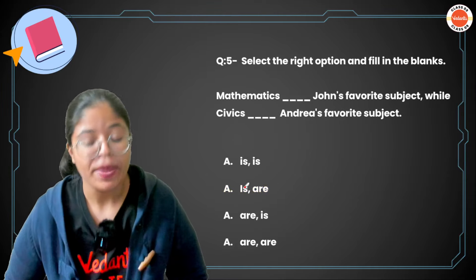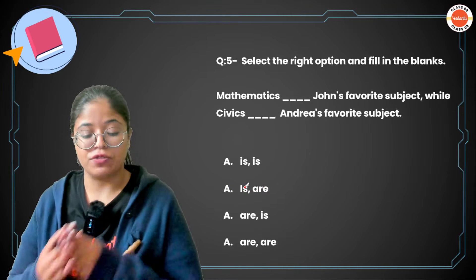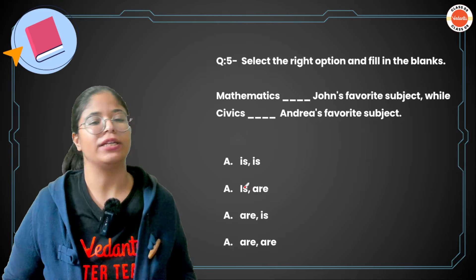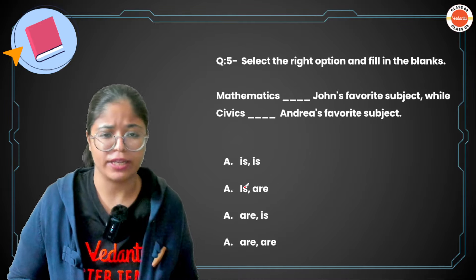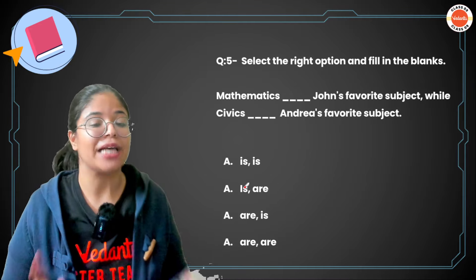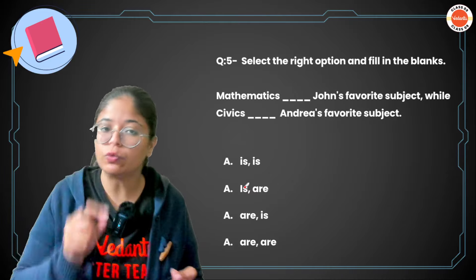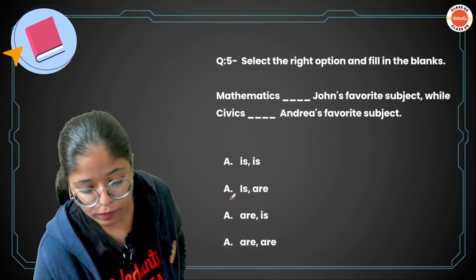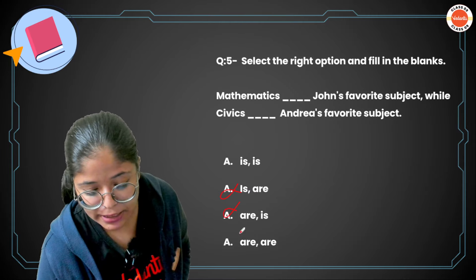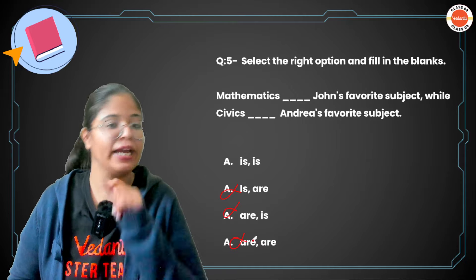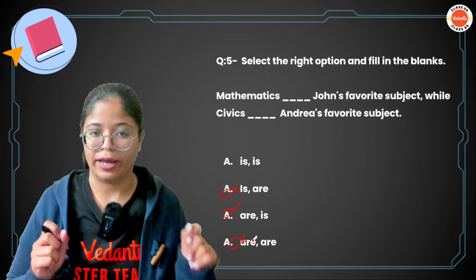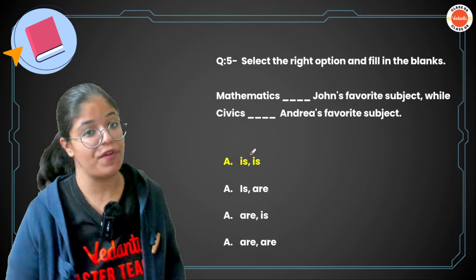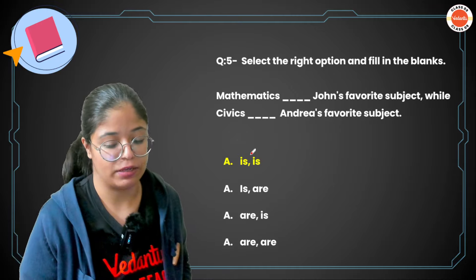Moving on to question number five: 'Mathematics dash John's favorite subject while civics dash Andrea's favorite subject.' This one is easy. Mathematics, civics, politics — all of these words may end with S, but they are not plural. They are singular subjects. So the verb will be singular. Options B, C, and D have at least one plural verb, so the correct answer is option A: 'Mathematics is John's favorite subject while civics is Andrea's favorite subject.'